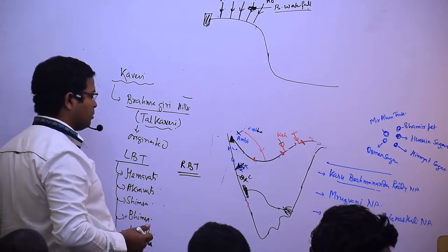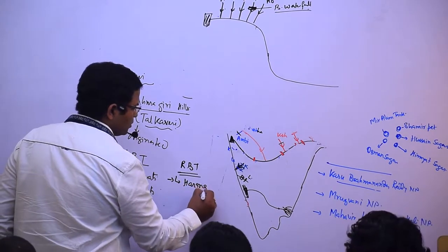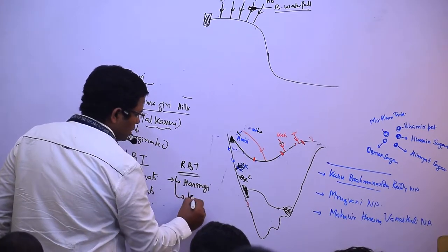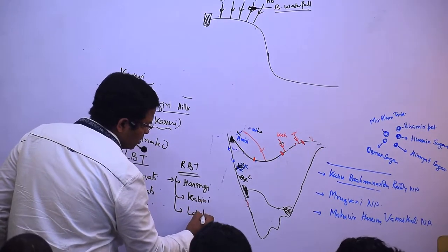Right bank tributaries: Harangi, Kabini, Lakshman Tirtha, Bhavani, and Amravati.